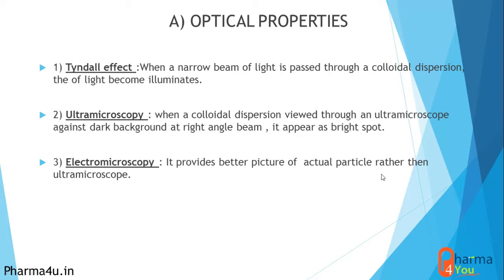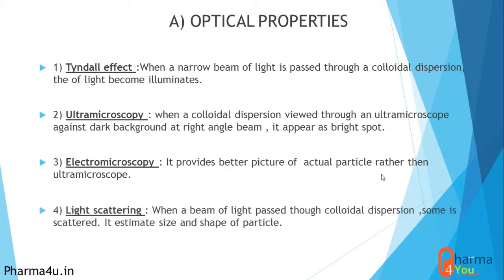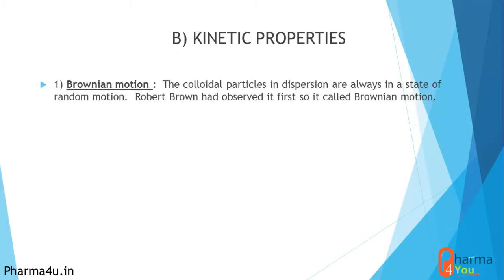Electron microscopy provides a better picture of the actual particle rather than ultra microscopy — if you want the actual structure and actual size determination of colloidal particles, you use electron microscopy. For light scattering: when a beam of light passes through a colloidal dispersion, some light is scattered. Most is reflected in one direction at a perpendicular angle and the rest is scattered. This scattering is used to determine the size and shape of the particles, similar to the Tyndall effect.